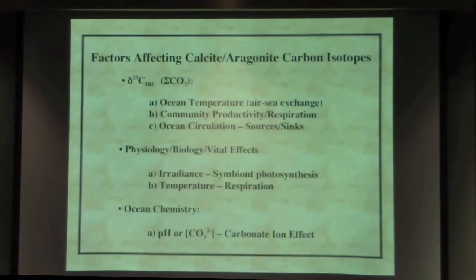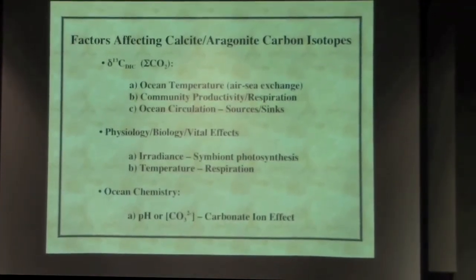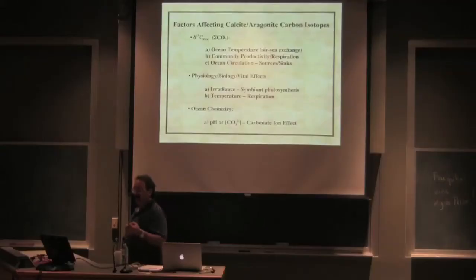The carbon isotopes, on the other hand, our starting point was that the delta-C13 of any type of calcifier should be a function of the delta-C13 of DIC. They're using the carbon in the water, so if you change that, you should change the delta-C13 of the calcium carbonate skeleton. And we've already talked about the fact that we have air-sea equilibration, we have photosynthesis respiration, and we have changes in ocean circulation, different currents and upwelling that are affecting the delta-C13 of DIC. On top of that, we have physiology.